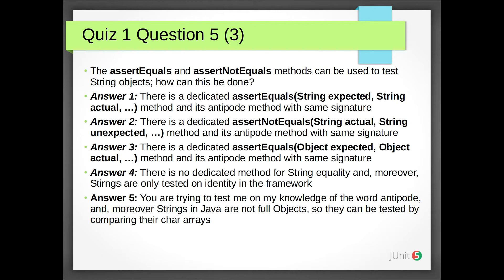Quiz 1 Question 5: The assertEquals and assertNotEquals methods can be used to test String objects. How can this be done? Answer 1: There is a dedicated assertEquals(String expected, String actual) method and its antipode method with the same signature. Answer 2: There is a dedicated assertNotEquals(String actual, String unexpected) method and its antipode method with the same signature. Answer 3: There is a dedicated assertEquals(Object expected, Object actual) method and its antipode method with the same signature. Answer 4: There is no dedicated method for String equality; moreover, Strings are only tested on identity in the framework. Answer 5: You're trying to test me on my knowledge of the word antipode; moreover, Strings in Java are not full objects, so they can be tested by comparing their char arrays. The correct answer is 3: there is a dedicated assertEquals(Object expected, Object actual) method and its antipode method with the same signature.